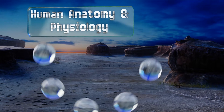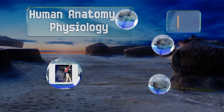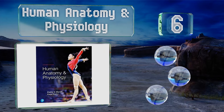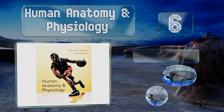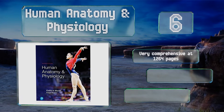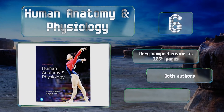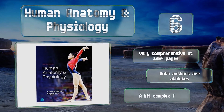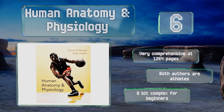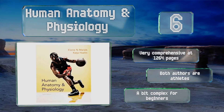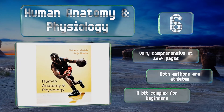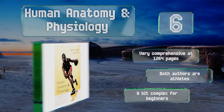Moving up our list to number six, Honan Marieb's Human Anatomy and Physiology is a must-have for anyone interested in the human body and for those studying sports medicine in particular. It helps create an understanding of our systems and how they work together, and conveys key concepts with clarity. It's very comprehensive at 1,264 pages and both authors are athletes. However, it's a bit complex for beginners.